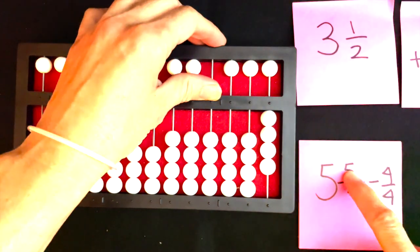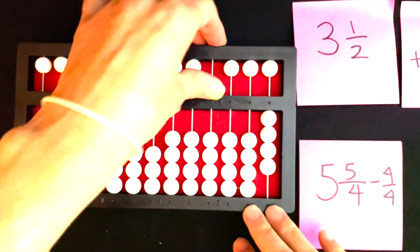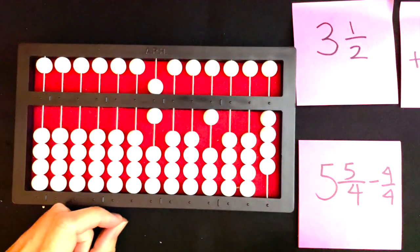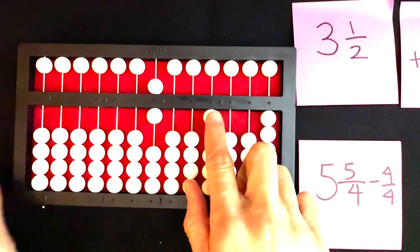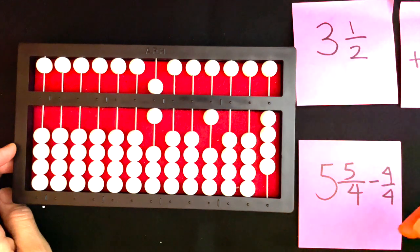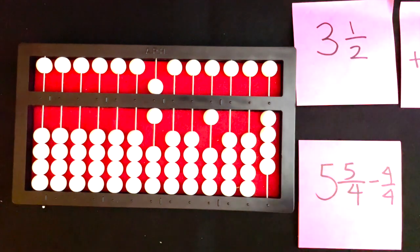If I subtract five minus four for the numerator, I get one. So then my final answer is going to be six and one-fourth. And that's how I do an addition problem on the abacus. Thank you.